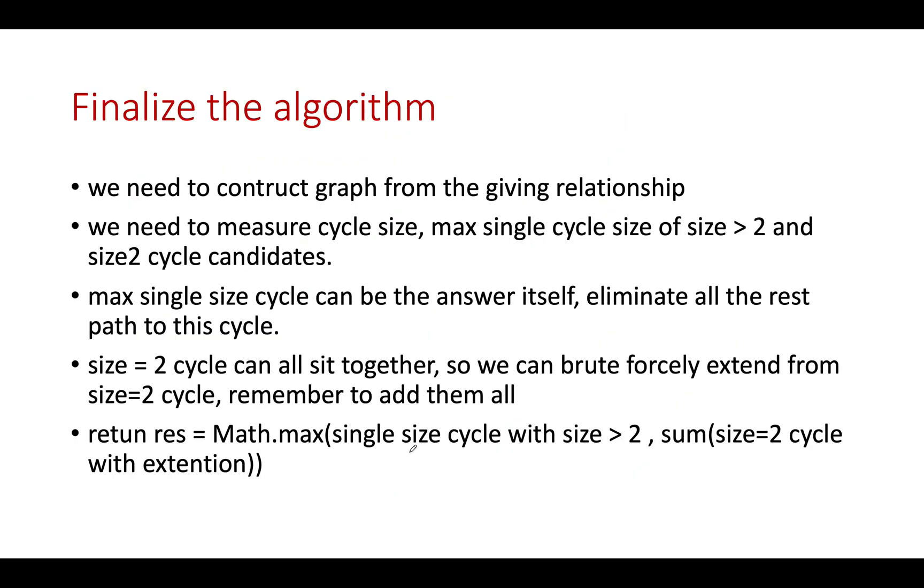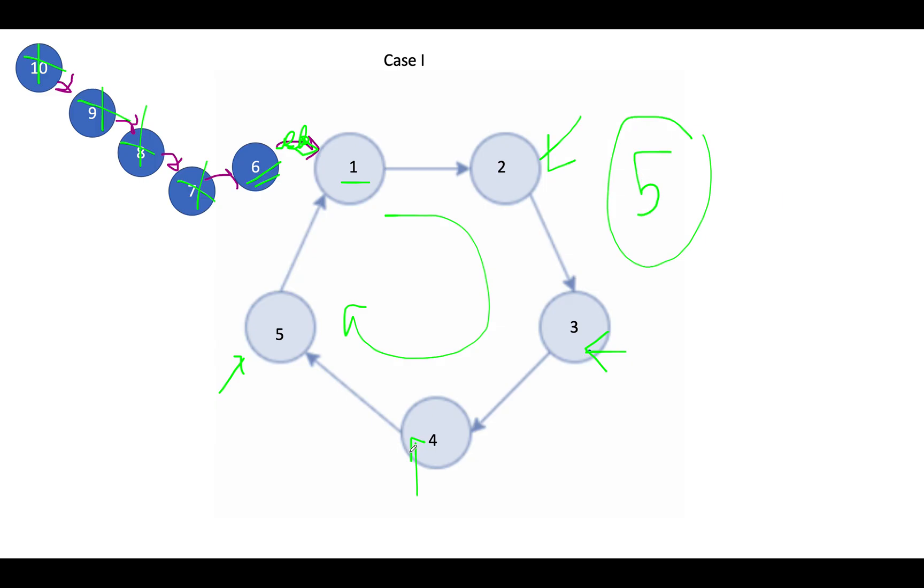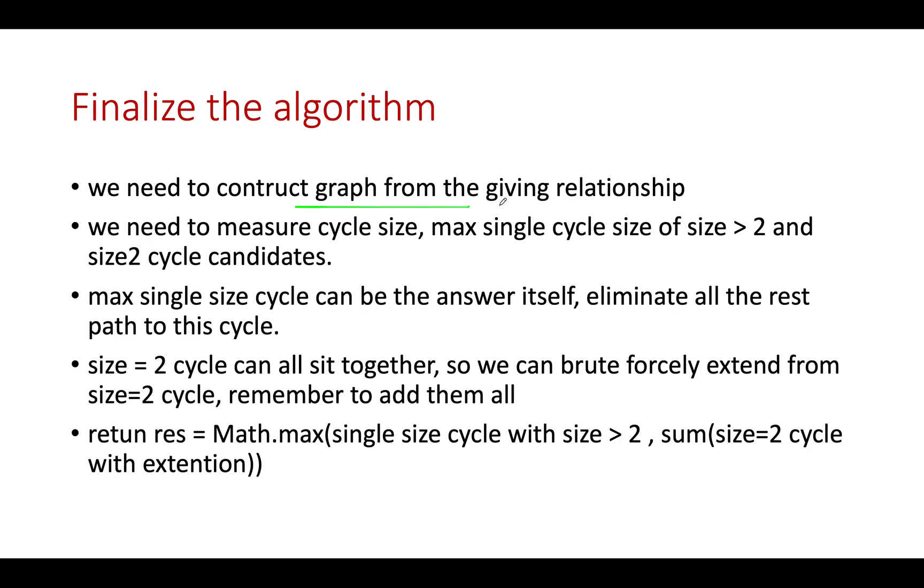In order to conclude, let's look at the final algorithm. It's the amalgamation of case two, case three, and case one. First, we need to construct the graph from the given relations of favorites. Then identify the cycles present in this directed graph and segregate into two lots: one with cycles of size greater than two, and one with cycles of size equal to two. One possibility of the answer could be the maximum cycle size where the length is greater than two. The other possibility can come from cycles of size two. All of them can sit together. We can extend the cycle two in both directions to increase the reach of all the members. Finally, the answer would be max of single cycle with size greater than two, and sum of all cycles of length two with extensions. Remember, we have to think of extensions as well.